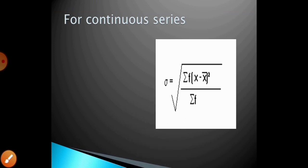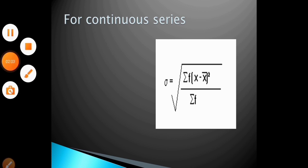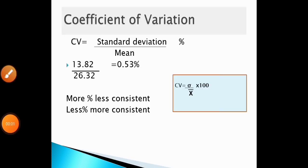For continuous series, the standard deviation is given by the formula: root of sigma f times (x minus x-bar) squared, divided by sigma f. The coefficient of variation is calculated using standard deviation divided by mean, multiplied by 100. Here the standard deviation was 13.82 and the mean was 26.32, giving a coefficient of variation of 0.53, or 53 percent.